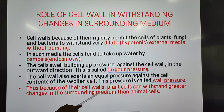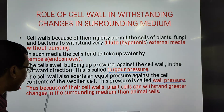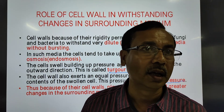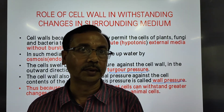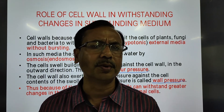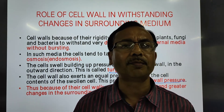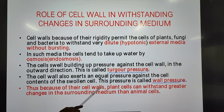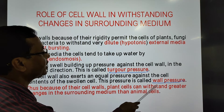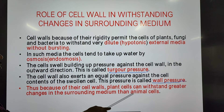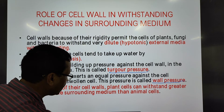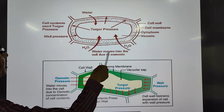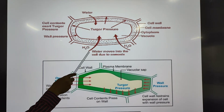Thus, because of cell walls, plant cells can withstand greater changes in the surrounding media compared to animal cells. If you put an animal cell such as an RBC into a hypotonic solution like plain water, the cell swells and at some point bursts — but that does not happen in plant cells. Looking at the slide, when a plant cell is placed in a hypotonic solution, water enters and turgor pressure develops.